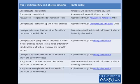If you are a new postgraduate student and have completed up to six months of your course, then you need to request a CAS online from the postgraduate admissions office.